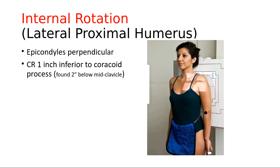We should still be collimated to 10 by 12 crosswise — nothing really changes between the exposures. Instead of the epicondyles being parallel to the IR, they are now perpendicular. When you internally rotate the hand like this, it places the humerus in a lateral position. The central ray doesn't change at all — still one inch below the coracoid, which is found two inches below mid-clavicle.